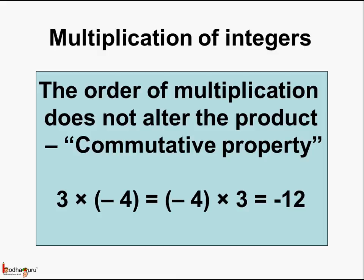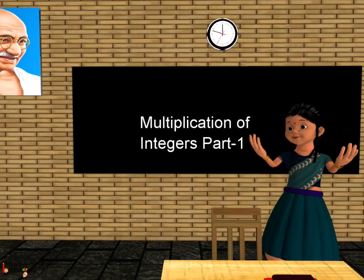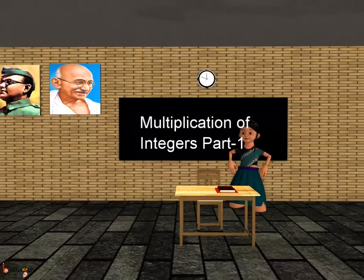Which was equal to minus 12. We also saw the property of 0 in relation to the multiplication of integers. When any integer is multiplied by 0, the product is always 0. Hence, minus 3 multiplied by 0 is 0. So that was all about properties related to multiplication of integers.